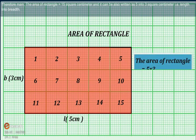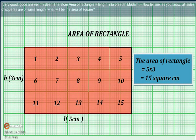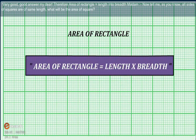Therefore, ma'am, the area of rectangle is equal to 15 cm². And it can be also written as 5 × 3 cm². That is, length × breadth. Very good. Therefore, area of rectangle is equal to length × breadth.